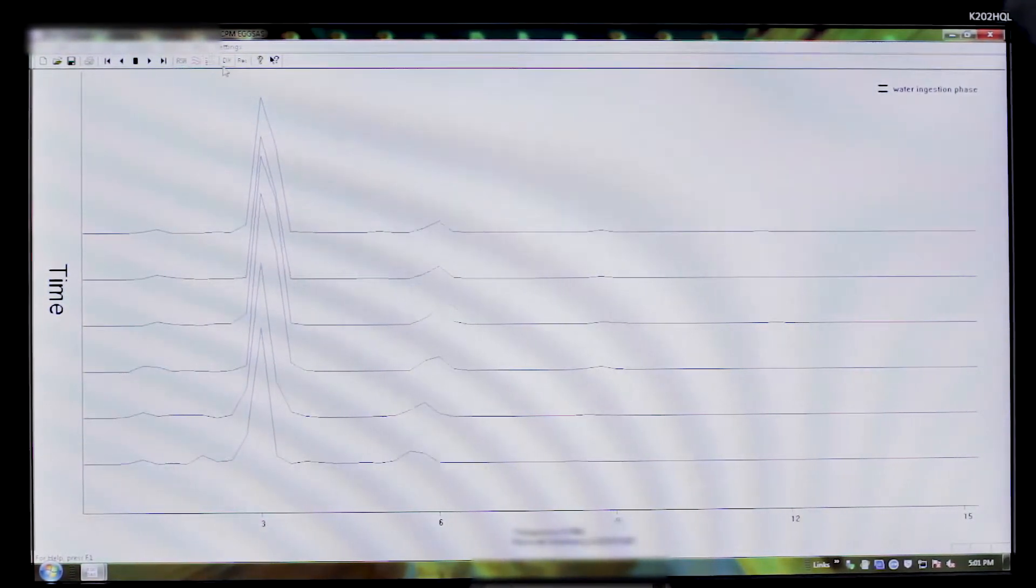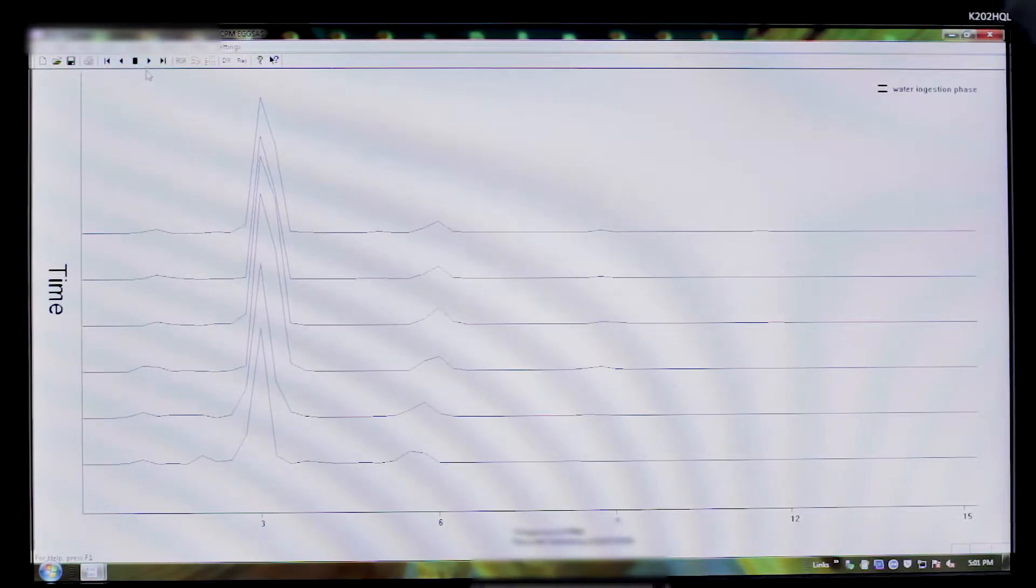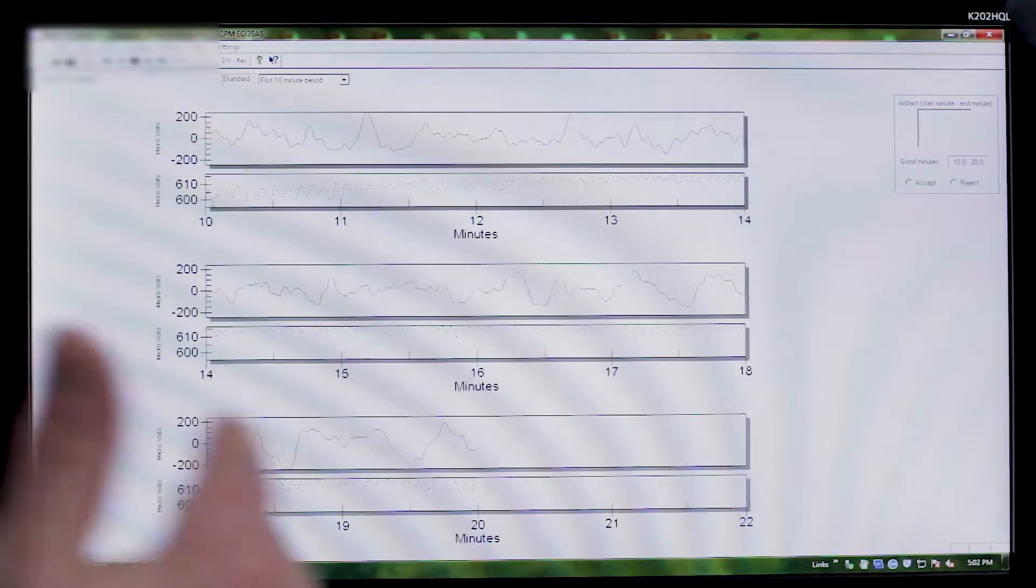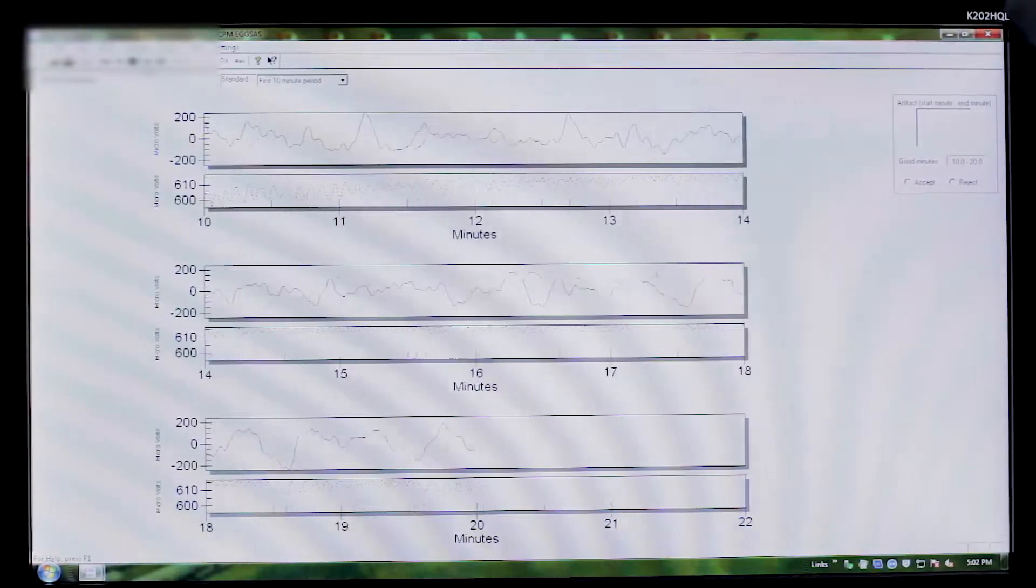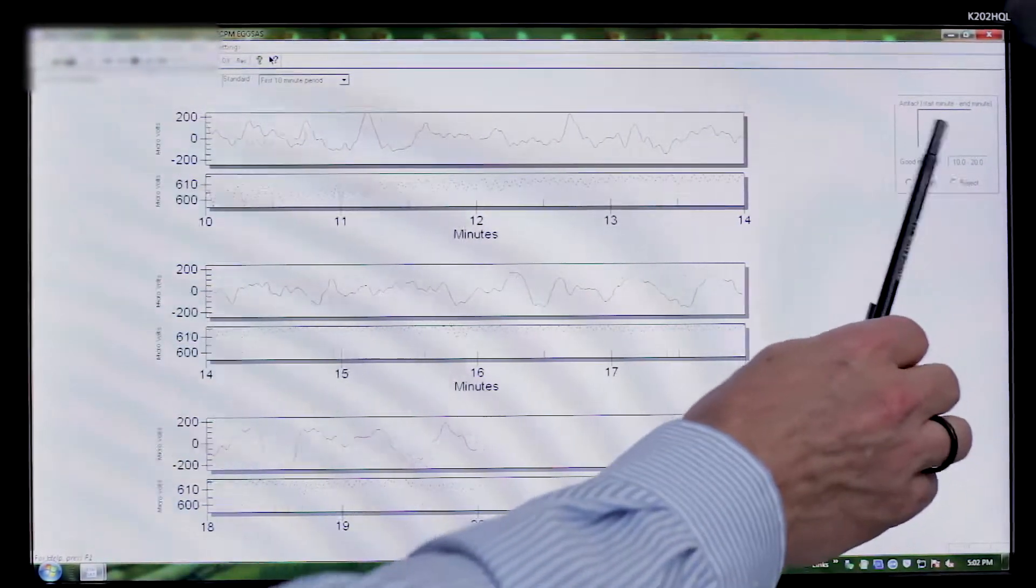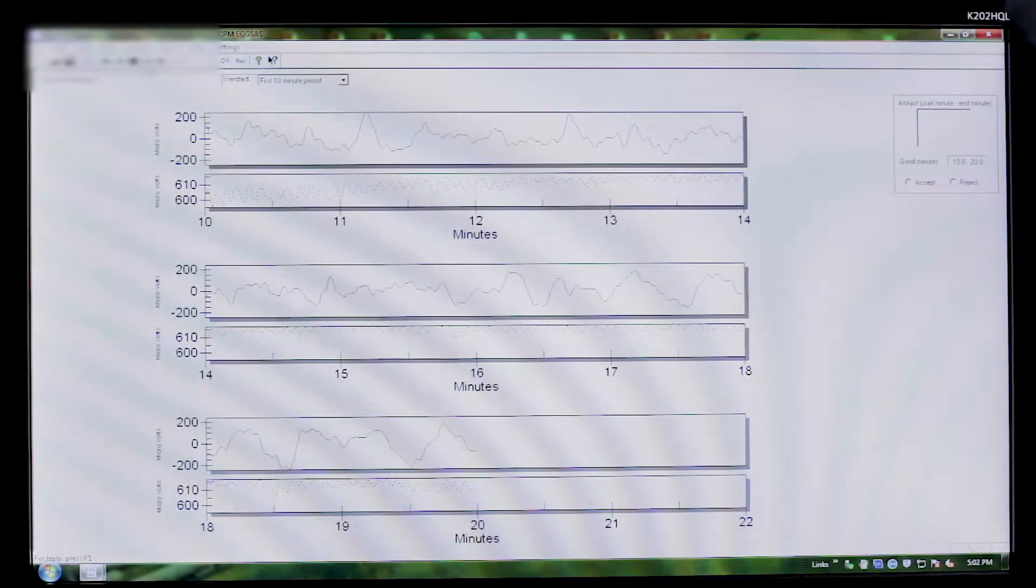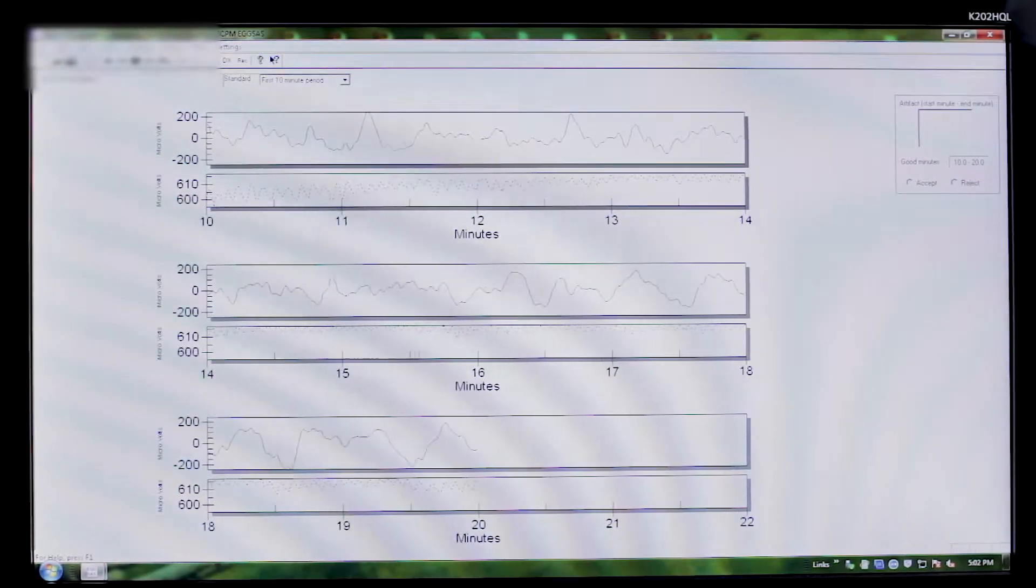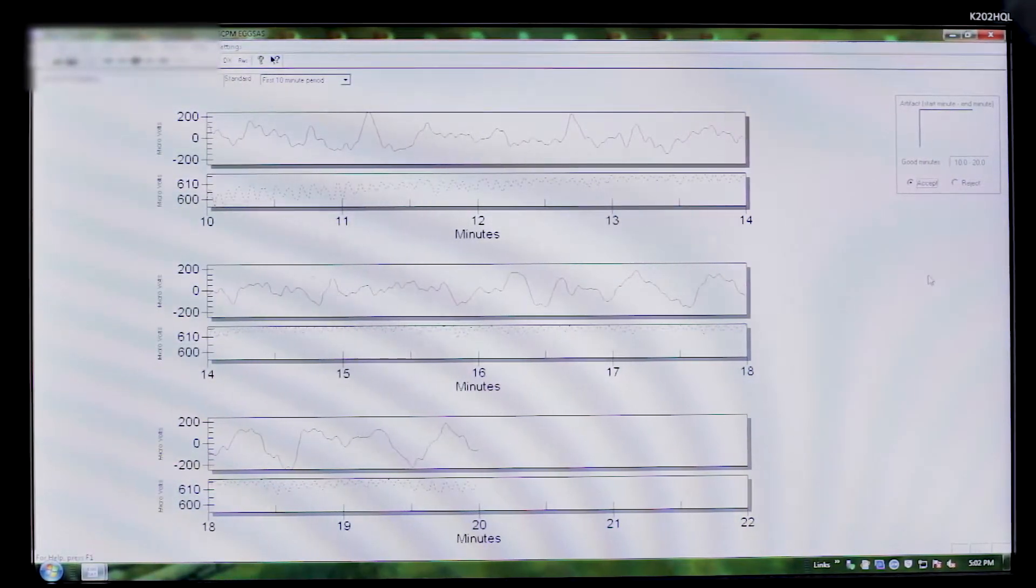I'm going to go over here and go back to the next 10-minute period. We're going to analyze each 10-minute period at a time. I first take a look in my artifact box. It tells me that I have no artifacts, and so I will go ahead and just accept that 10-minute period.